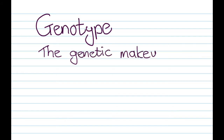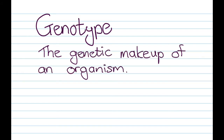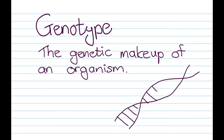First up is genotype. Genotype is the genetic makeup of an organism, which means it has to do with the DNA. They will sometimes use words like homozygous, heterozygous, or some kind of a key code that you'll find in the example.